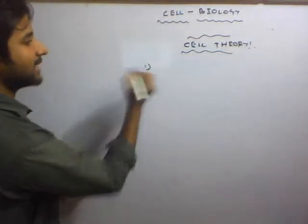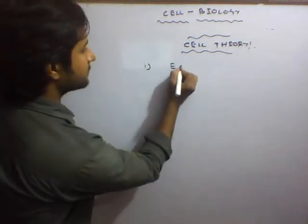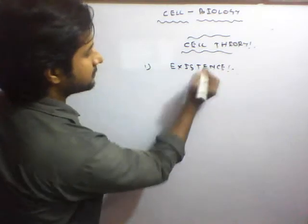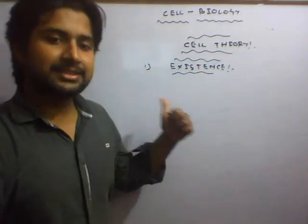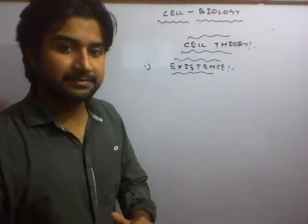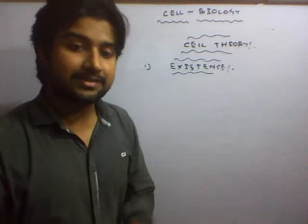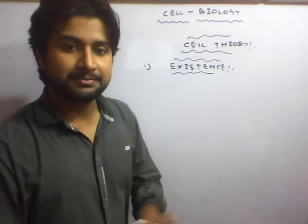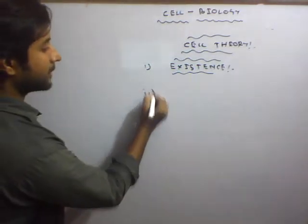The first point of cell theory concerns the existence of cells — all cells arise from pre-existing cells. Rudolf Virchow in 1855 stated 'Omnis cellula e cellula,' which means all cells arise from pre-existing cells.